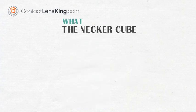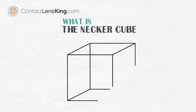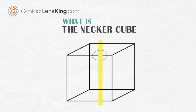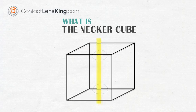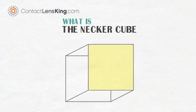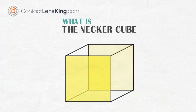What is the Necker Cube? The Necker Cube is an ambiguous line drawing of a wire-frame cube, where the edges of the cube are drawn as parallel lines, with no cues illustrating if one line crosses in front of another. This creates a scenario where there exist two possible orientations of the three-dimensional cube.